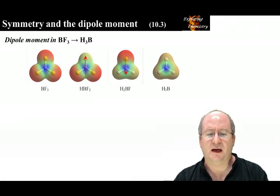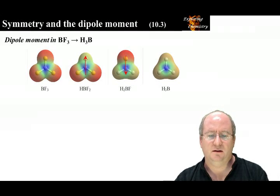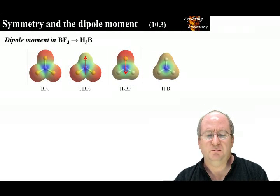This shows the progression from BF3 to BH3. Both BF3 and BH3 have 0 dipole moment because they are trigonal planar with all terminal atoms being the same. However, HBF2 and H2BF have a dipole moment as shown.